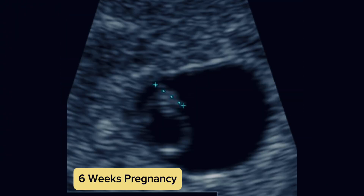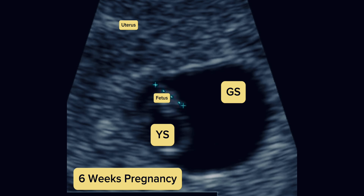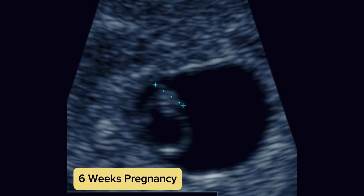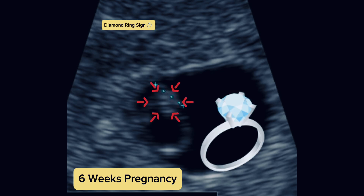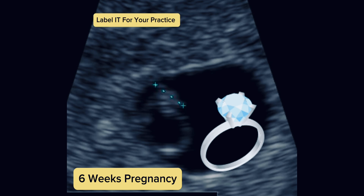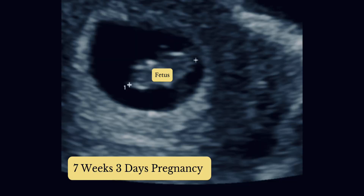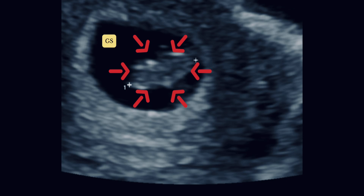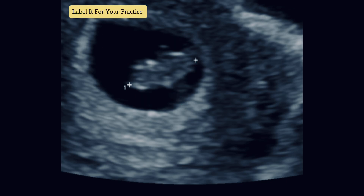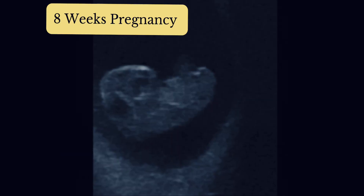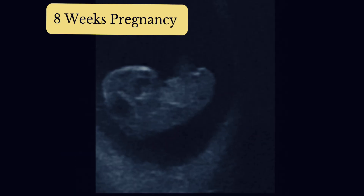Crown rump length (CRL) refers to the measurement of the embryo or fetus from the top of the head to the bottom of the torso. It is the most precise method for estimating gestational age in early pregnancy, as biological variability is minimal during this stage. The earlier in pregnancy a scan is conducted, the more precise the age estimation based on CRL. If the initial CRL measurement is sufficient, it serves as the baseline for all future age assessments.